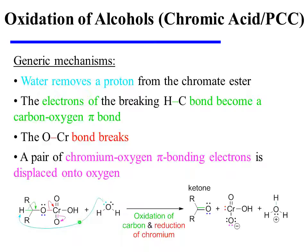Water then removes a proton from the chromate ester. The electrons of the breaking carbon-hydrogen bond collapse in between carbon and oxygen, forming a carbon-oxygen pi bond. This oxidizes the carbon of the substrate.